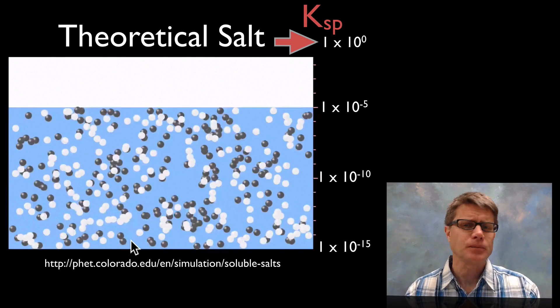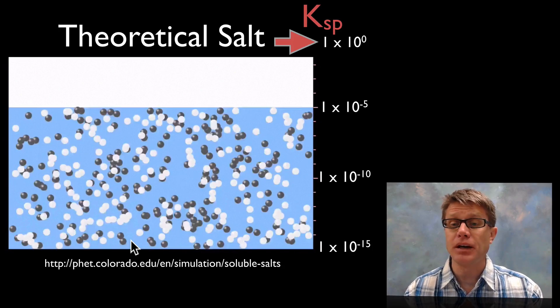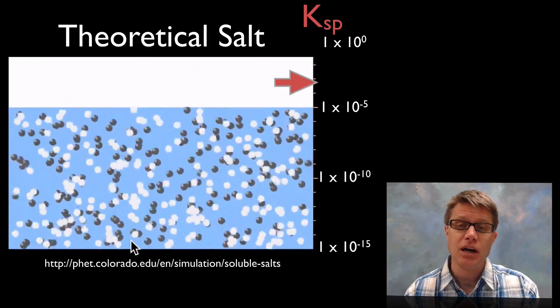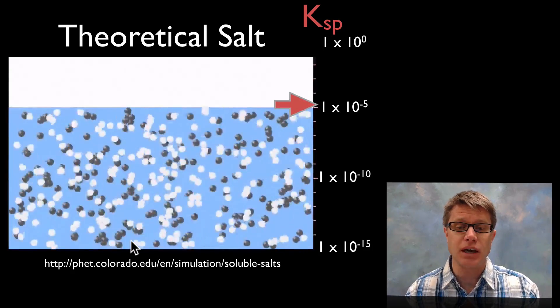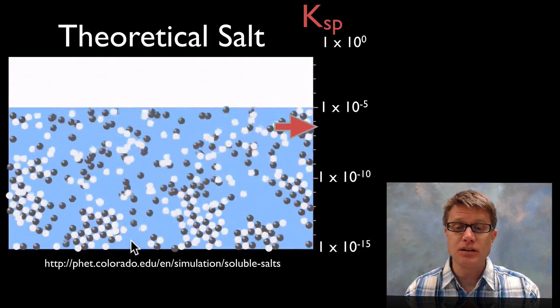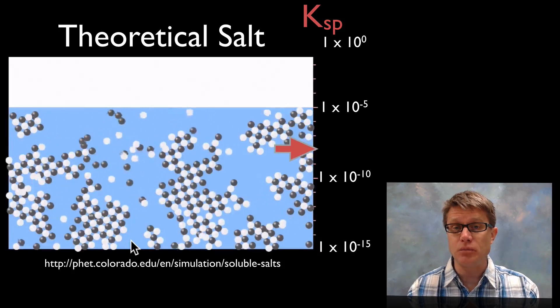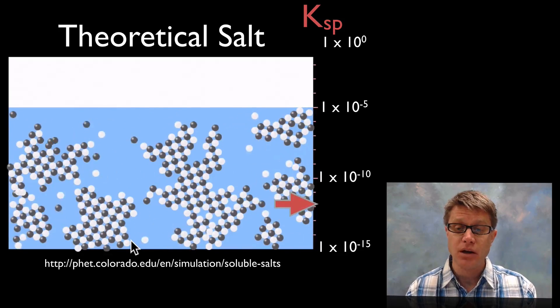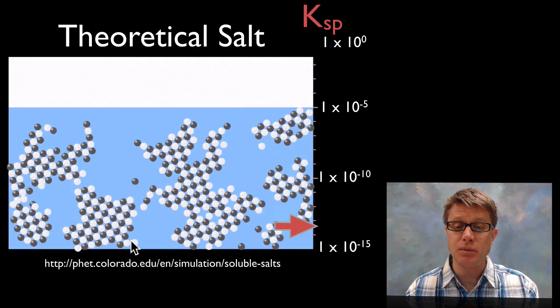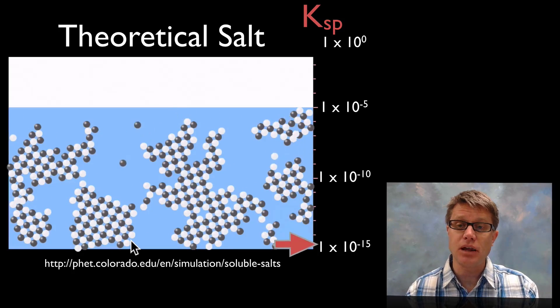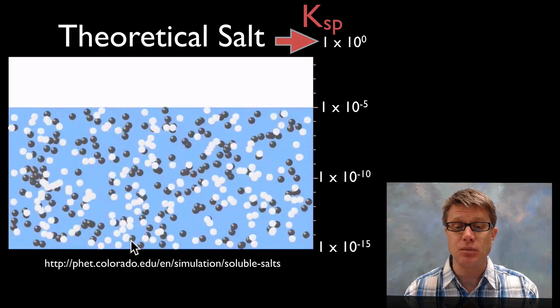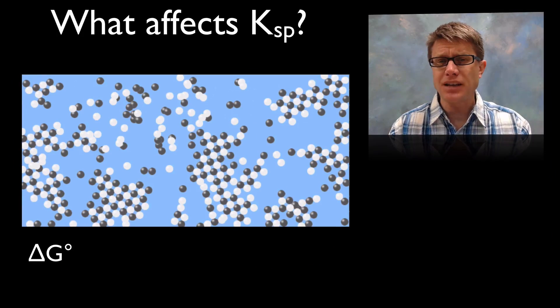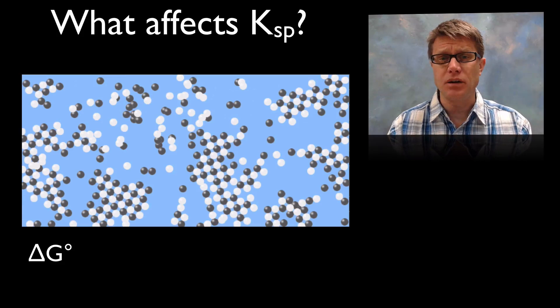And so the neat thing about this simulation is you can play around with the Ksp values. Now I've got a theoretical salt with cations and anions and I'm simply going to lower the Ksp value. You can see as I lower it it's starting to move back more towards the left. It's moving back more towards that solid form. So if you have a really low Ksp value it's going to be shifted towards the left. If I radically increase Ksp then it goes way back more towards the right or in aqueous solution. And so that's what Ksp affects.